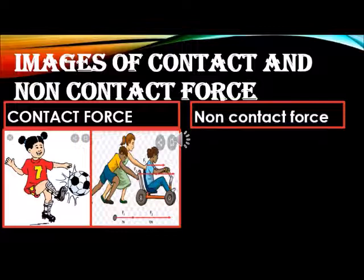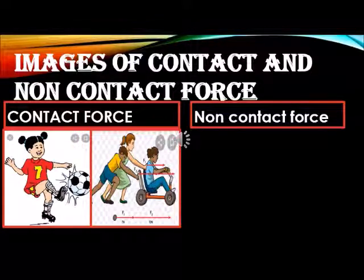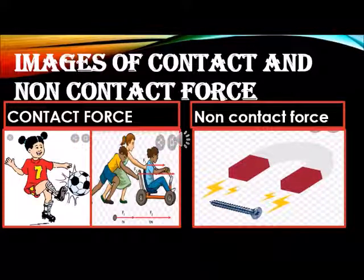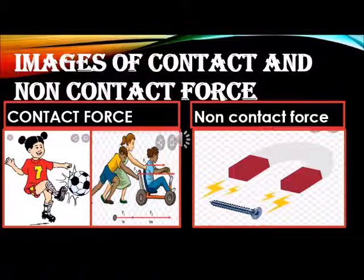When we look at the right side of the screen, we can see another image: the magnet trying to attract a metal object. That is an example of non-contact force, otherwise called force field. Magnetic force is an example of non-contact force.